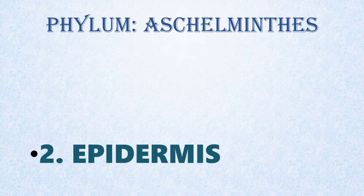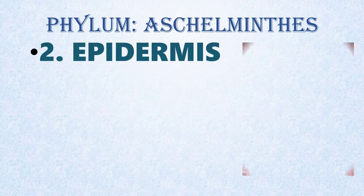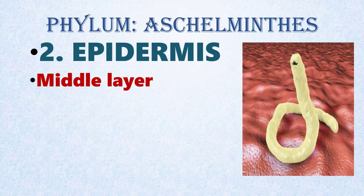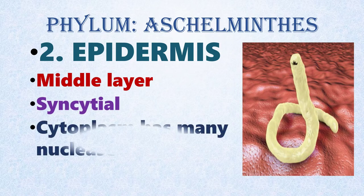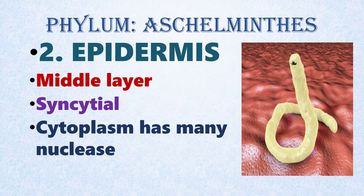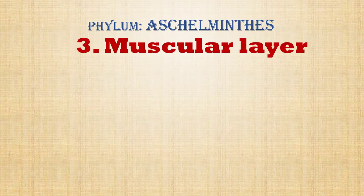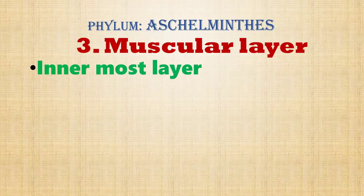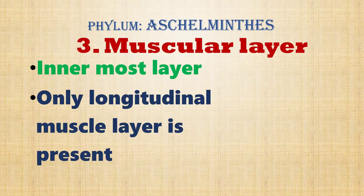The middle layer of the body wall is the epidermis, which is syncytial — meaning the cells of the epidermal cytoplasm have many nuclei instead of a single nucleus. The innermost muscular layer of Aschelminthes is made up of only longitudinal muscle fibers.